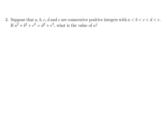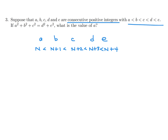Suppose that a, b, c, d, and e are consecutive positive integers with a less than b less than c less than d less than e. If a² + b² + c² equals d² + e², what is the value of a? Since a, b, c, d, e are consecutive positive integers, I will call them n, n+1, n+2, n+3, and n+4.